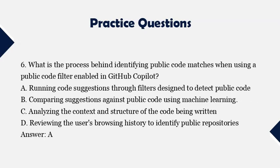Question 6: What is the process behind identifying public code matches when using a public code filter enabled in GitHub Copilot? A. Running code suggestions through filters designed to detect public code. B. Comparing suggestions against public code using machine learning. C. Analyzing the context and structure of the code being written. D. Reviewing the user's browsing history to identify public repositories. Answer: A.